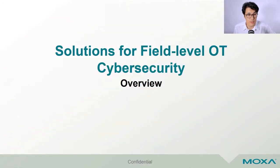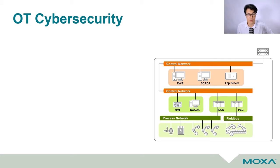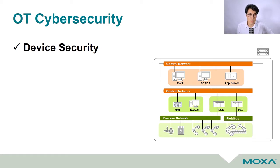I will use this simplified OT architecture to show you where cybersecurity countermeasures can be installed. Right now there is no protection, and we are going to add it layer by layer. To keep it simple, I have divided countermeasures into four groups. First, and probably the most obvious thing, is that we need to protect our hosts or devices, because in most attacks they are the final targets.